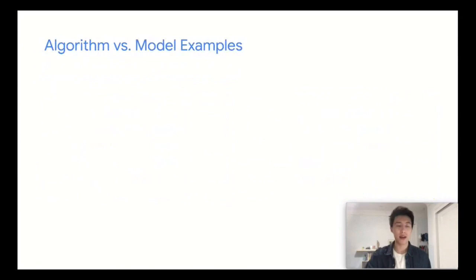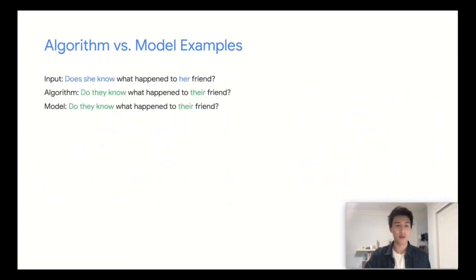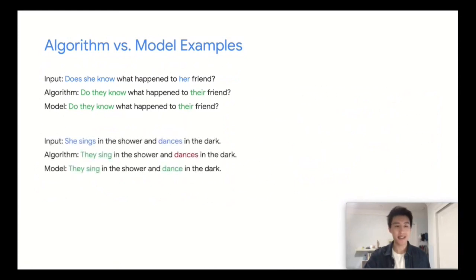To demonstrate what I mean, I'll go through three examples comparing the algorithm to the model. The first example is one from earlier: does she know what happened to her friend? Both the algorithm and the model get it correctly. The second sentence is she sings in the shower and dances in the dark. The algorithm misses the second verb dances, but the model rewrites the sentence perfectly.